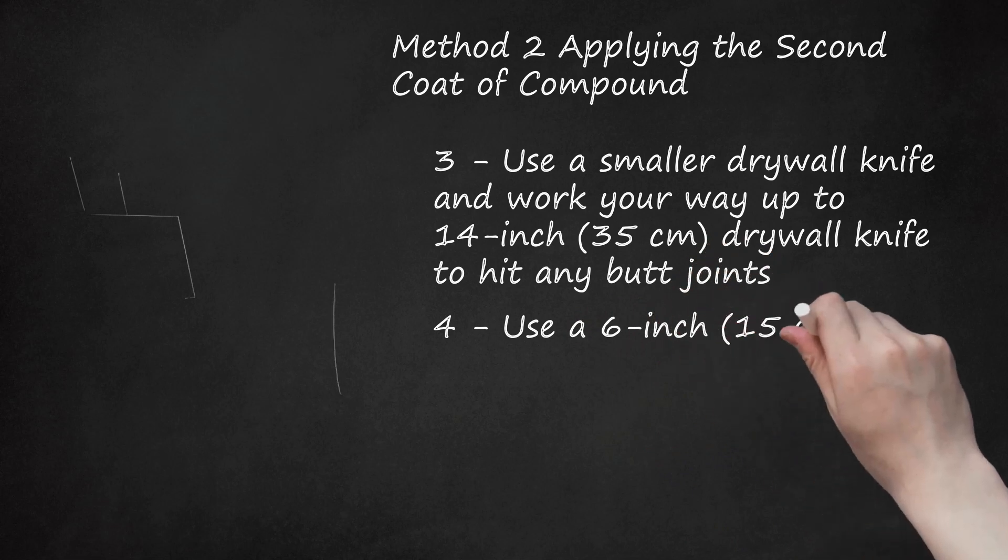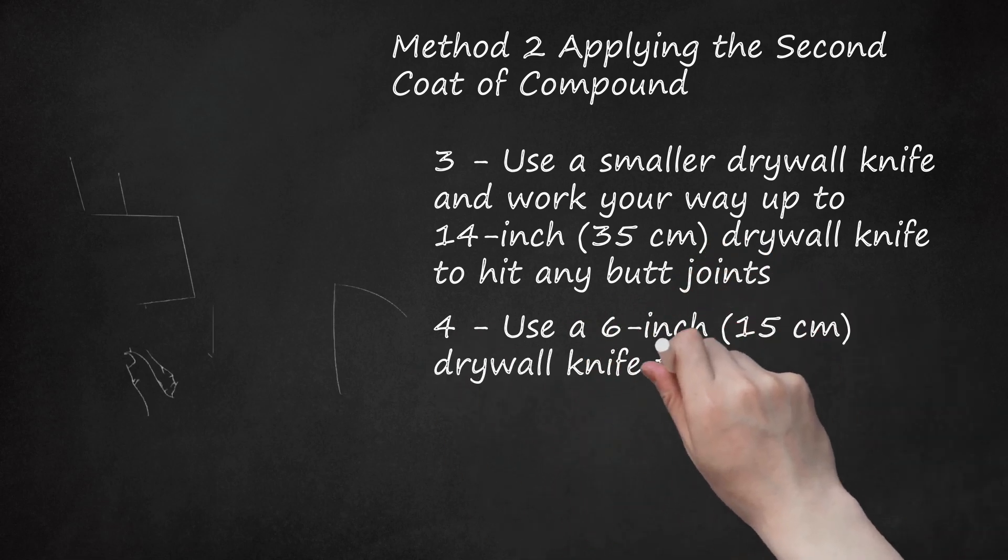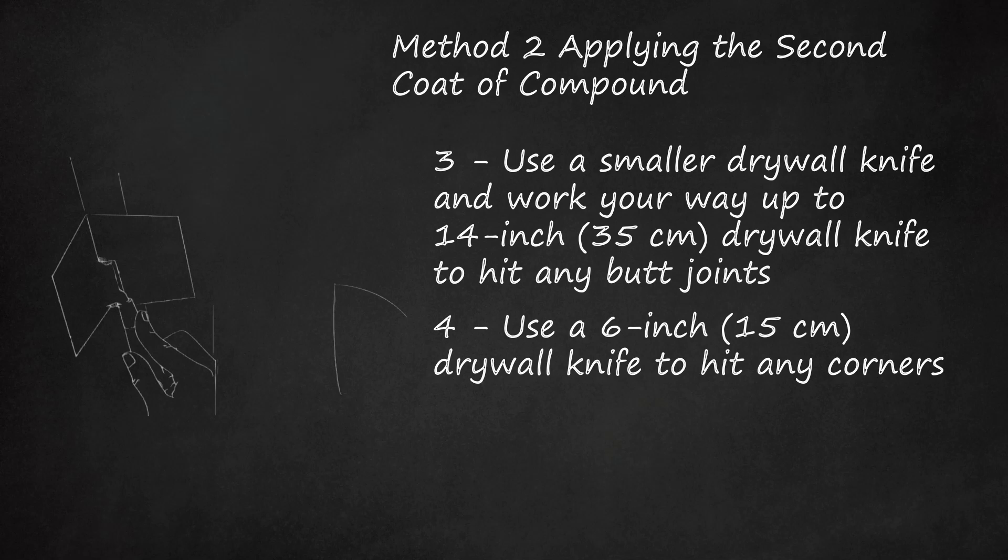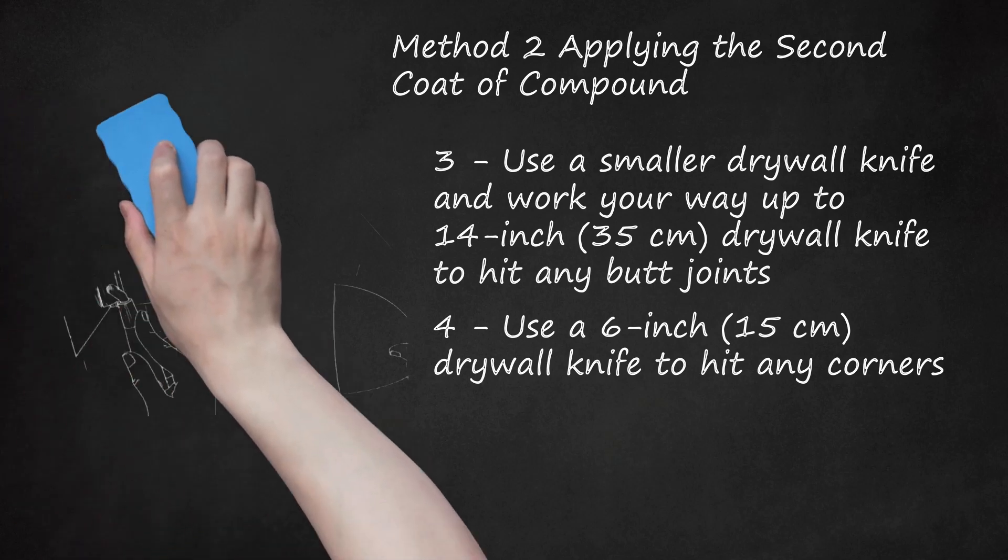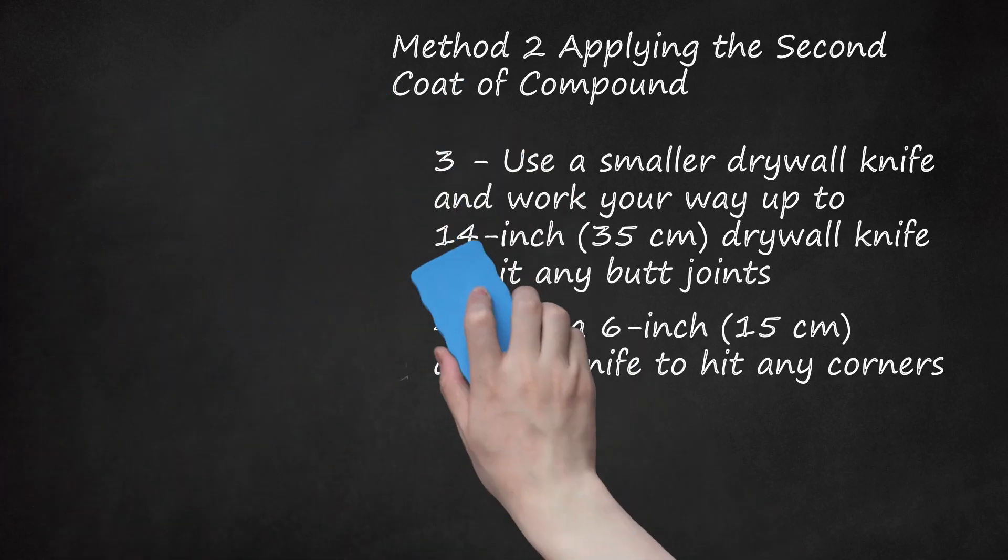Step 4: Use a 6-inch (15 centimeters) drywall knife to hit any corners. Use your drywall knife to finish one side of the corner only and let dry. Wait one day and then finish the other side of the corner with the same knife. If you try to finish both corners in the same day, you'll pull out compound on the opposite side when you push down with your knife in the corner. If you wish, you can use an inside corner tool instead of finishing each corner one by one. An inside corner tool is a drywall knife that's curved at a 90-degree angle in the middle, perfect for hitting inside corners. Using this tool, however, requires a little bit of skill.